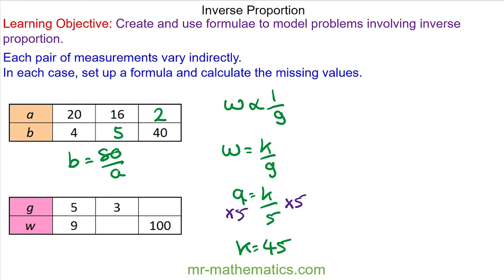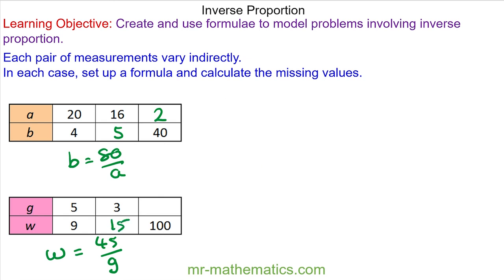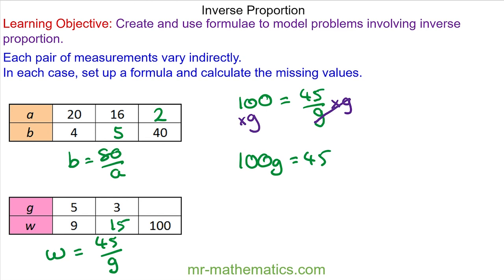So our model is that w is equal to 45 over g. We can use this model to work out the value of w for a given g. And lastly, when w is equal to 100, we use our model to work out the value of g. We make g the subject by multiplying both sides by g, so 100g is equal to 45. Dividing both sides by 100, g equals 45 divided by 100, which is 0.45.